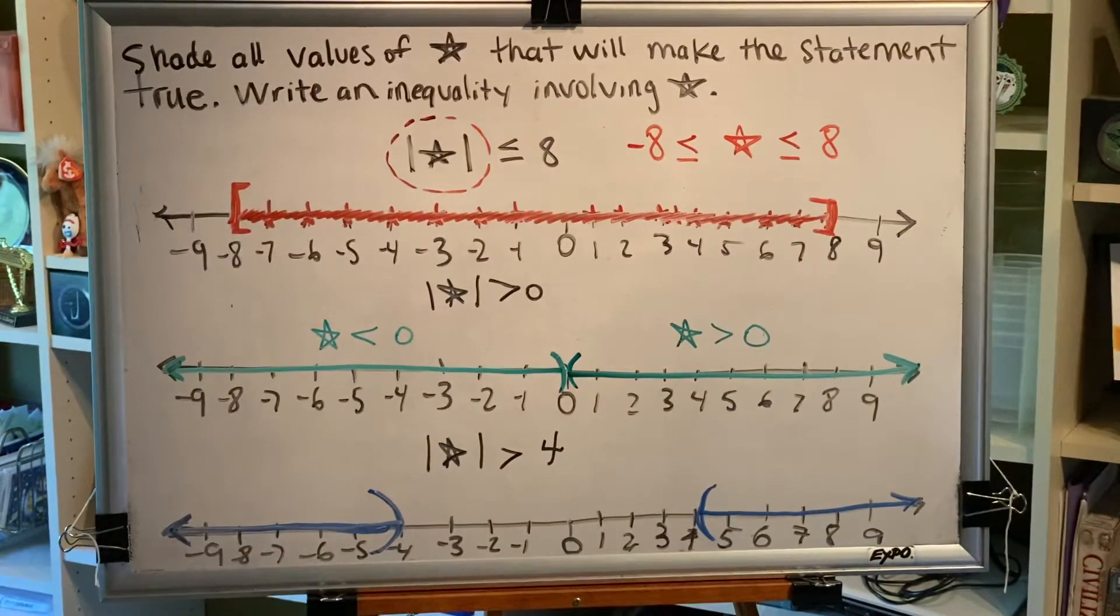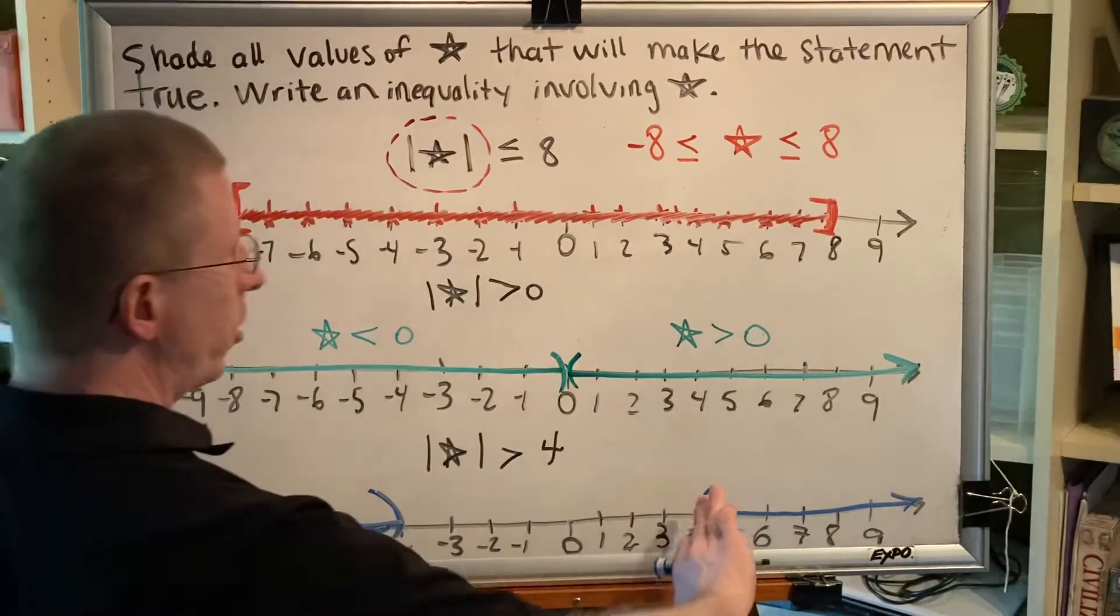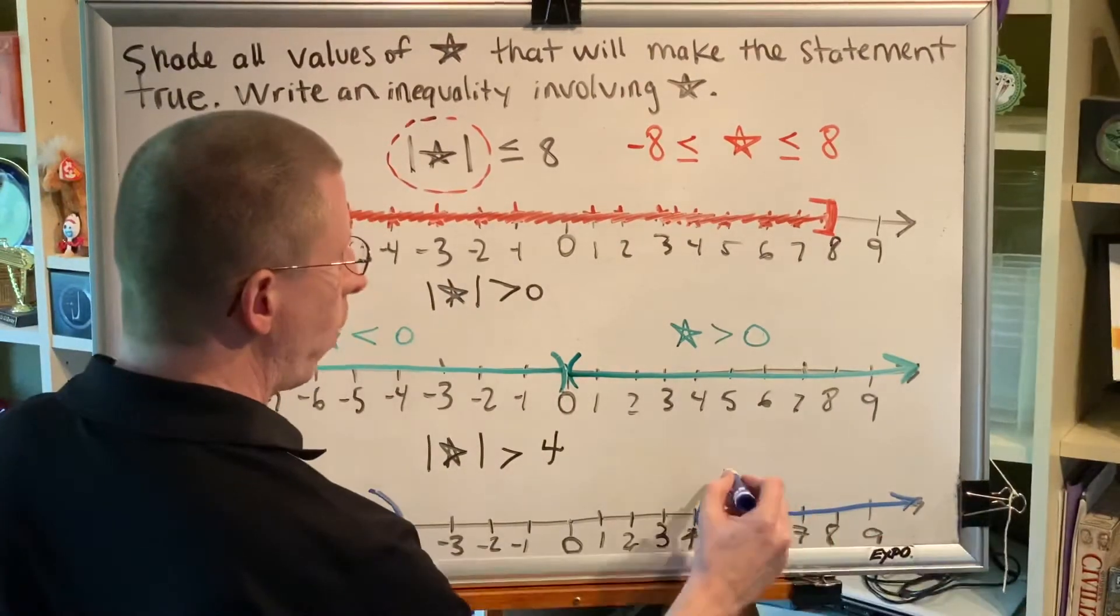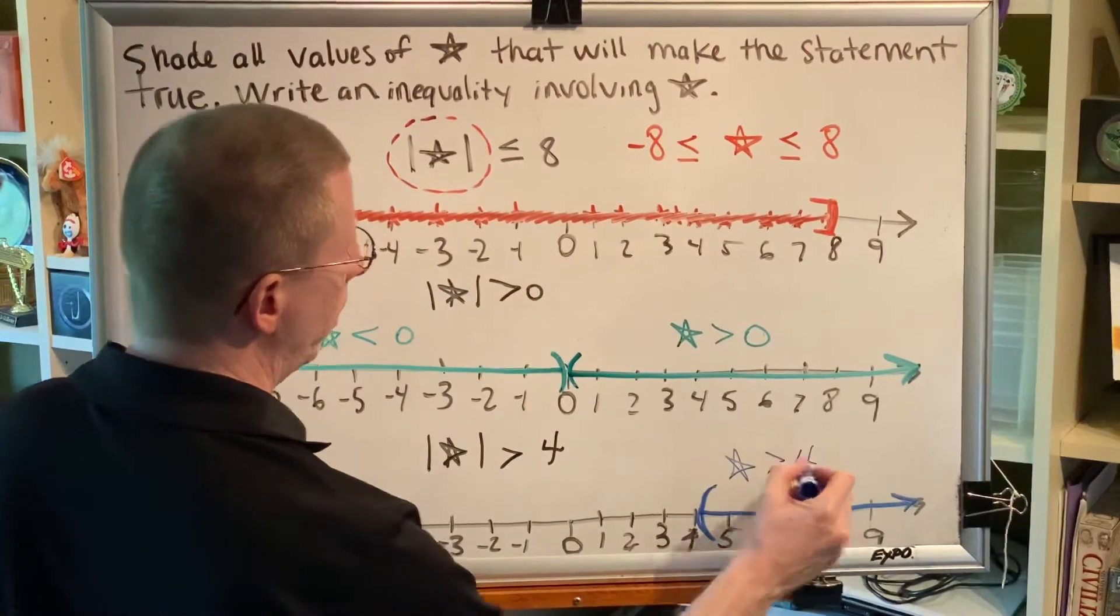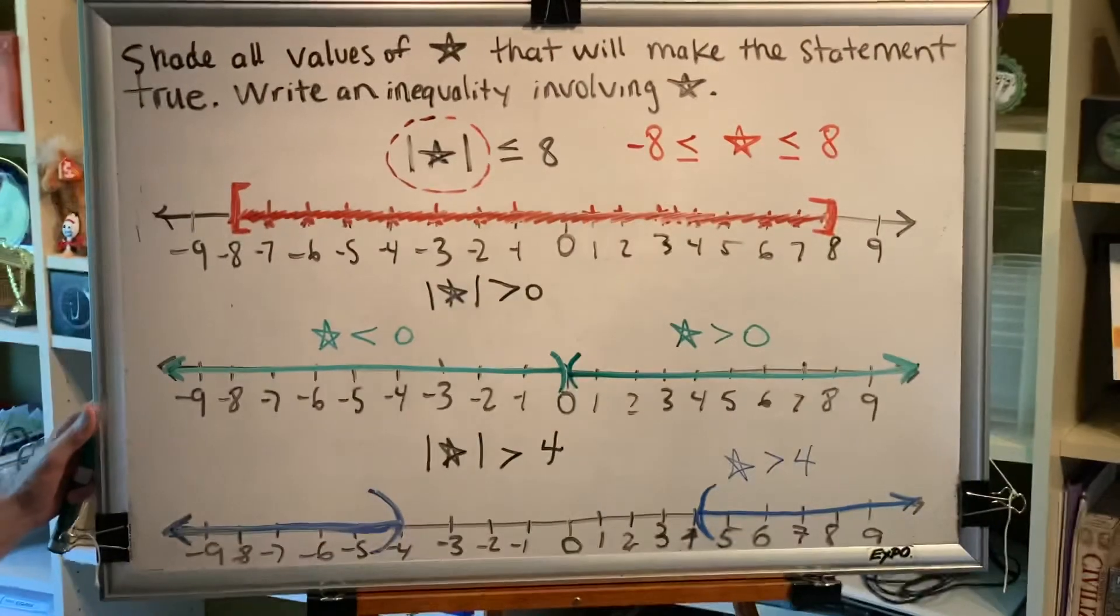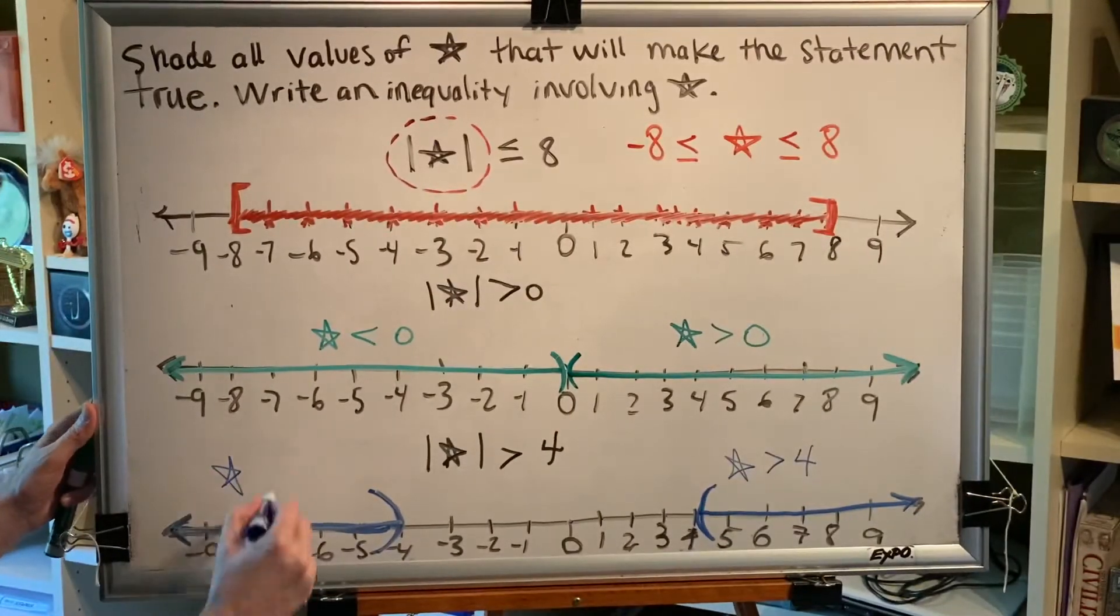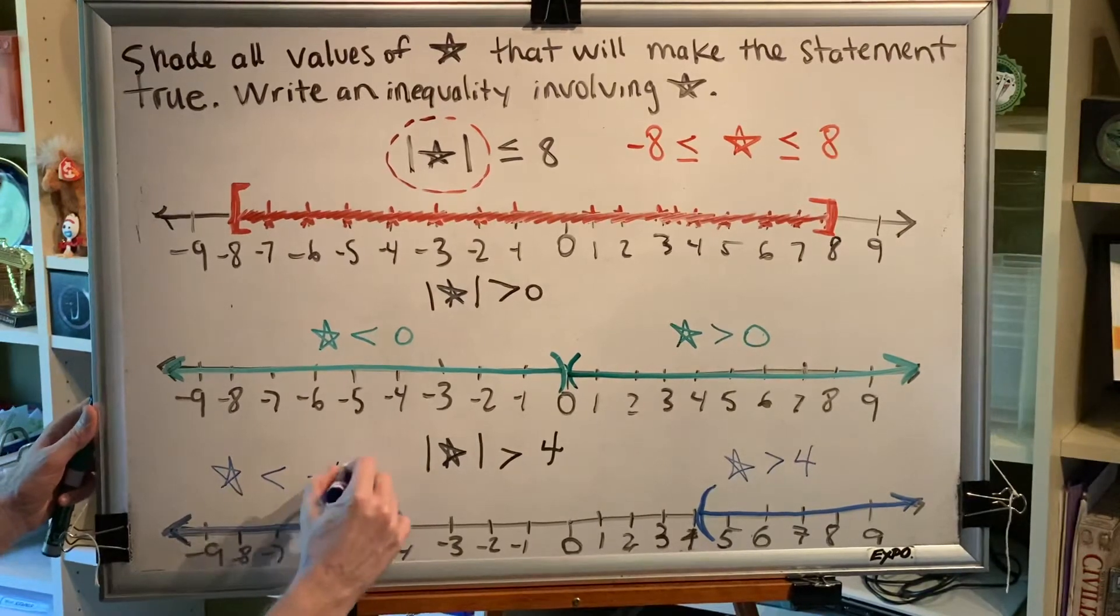And finally, that brings us to our blue number line. These numbers here are to the right of 4, so we would say star is greater than 4. These are all to the left of negative 4, so we would say that these numbers are all less than negative 4.